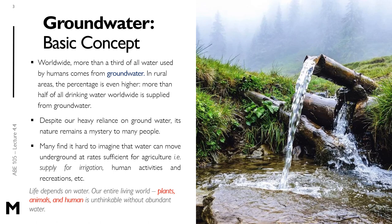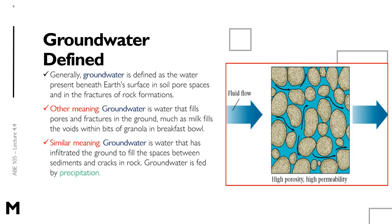There are many definitions of groundwater. Generally, groundwater is defined as the water present beneath the earth's surface in soil pore spaces and in the fractures of rock formations. Another meaning: groundwater is water that fills pores and fractures in the ground, much as milk fills the voids within bits of granola in a breakfast bowl. Similarly, groundwater is water that has infiltrated the ground to fill the spaces between sediments and cracks in rock. Groundwater is fed by precipitation.